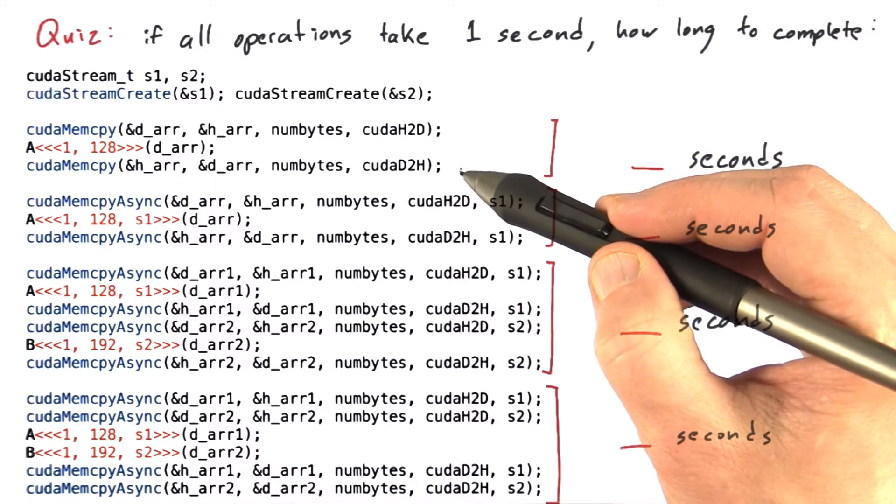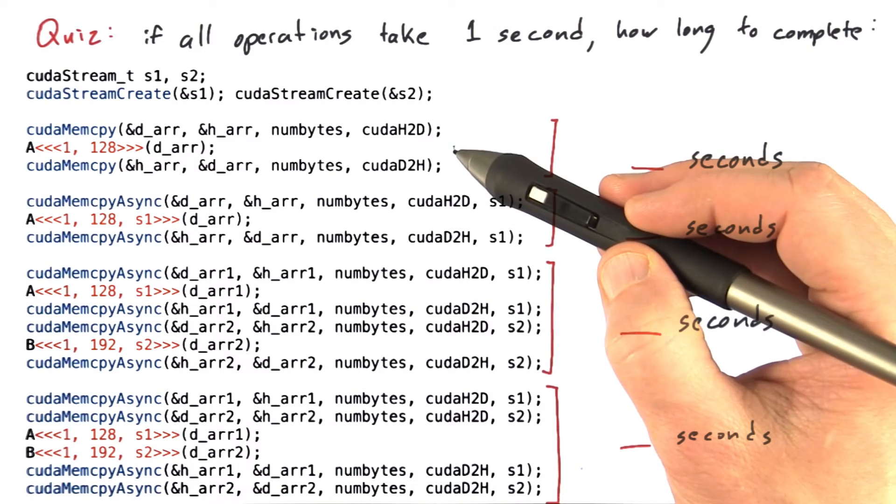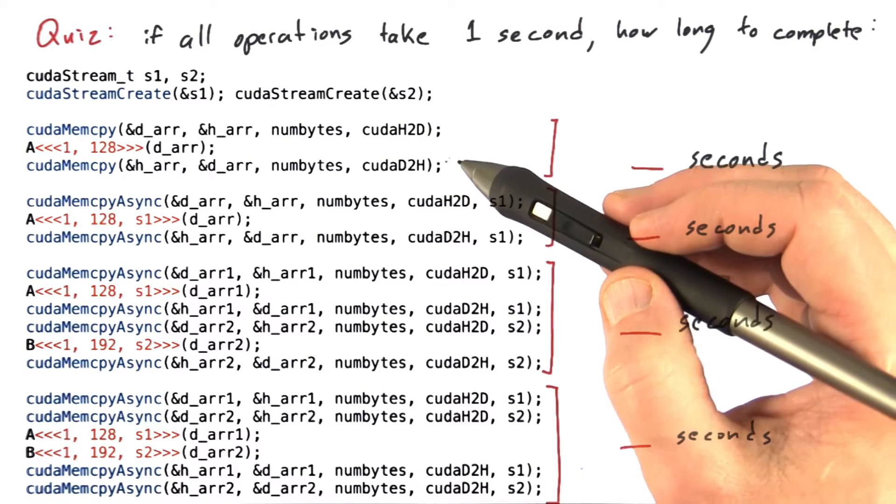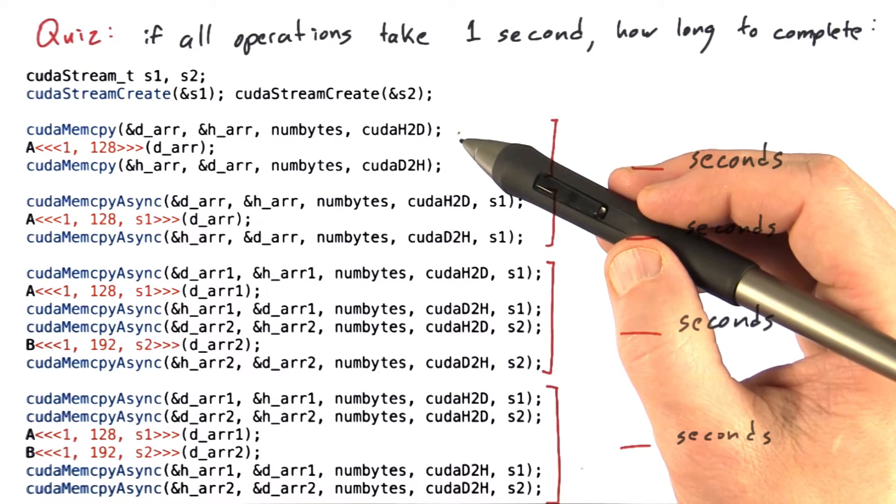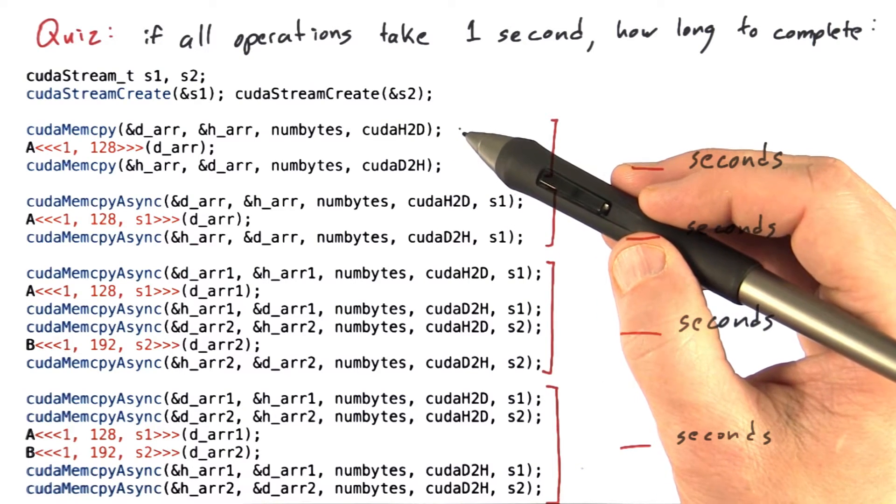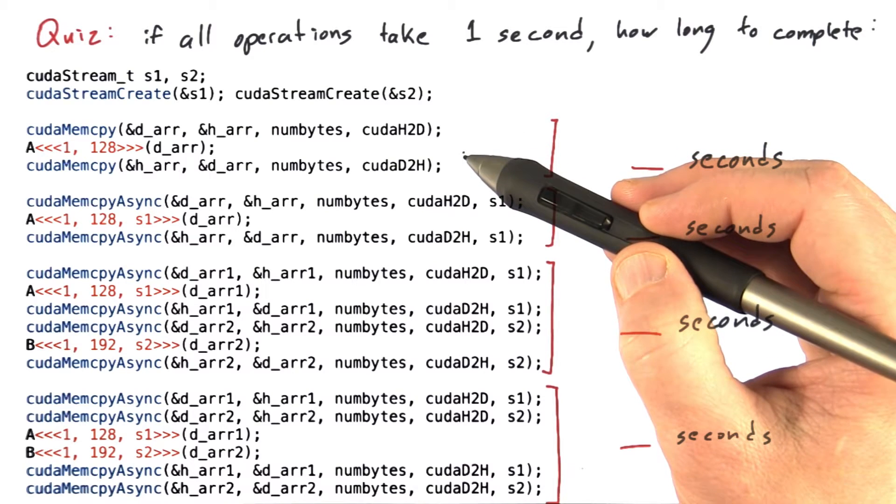Well, this first code snippet doesn't assign streams at all. None of these operations declare a stream, and therefore they're all in the default stream. Since they're in the same stream, each one must complete before the next one is allowed to run.